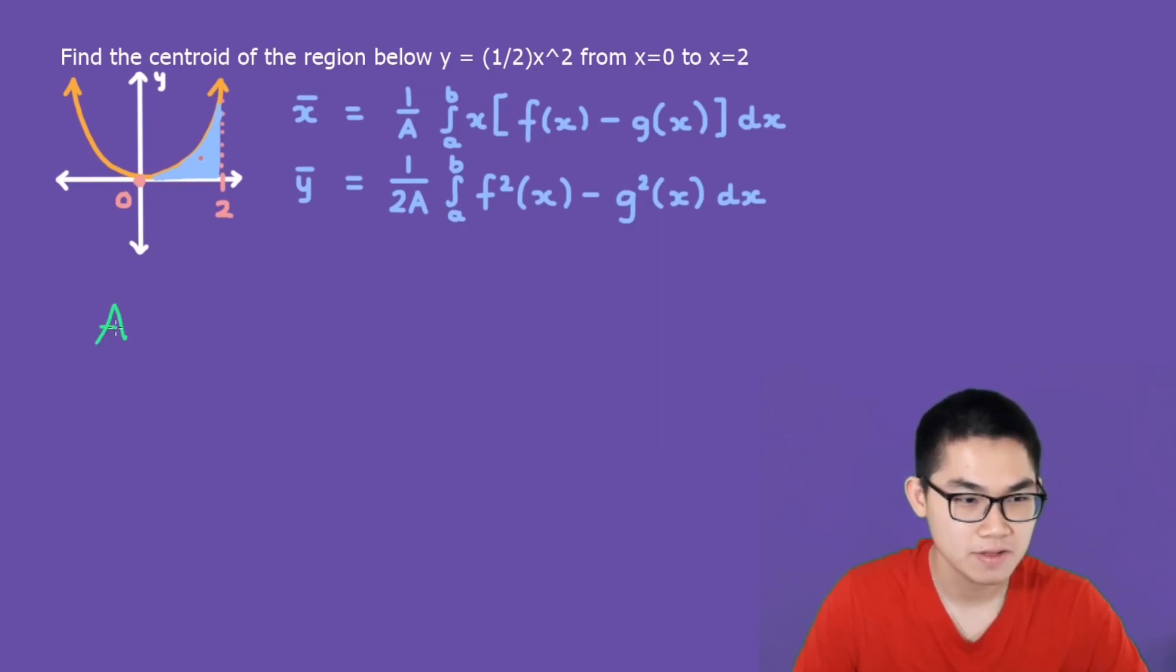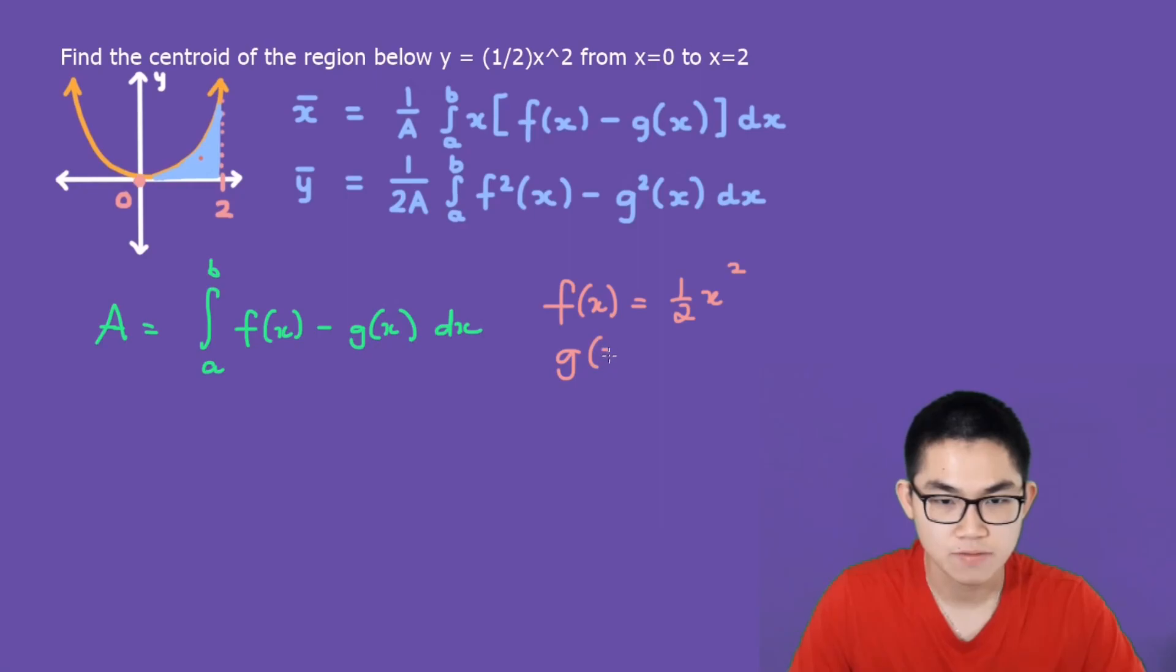So the area under the curve is just the integral from a to b of f(x) minus g(x) dx. So what is f(x)? f(x) is the upper function. So that's going to be the upper function, which is 1/2 times x squared. How about g(x)? g(x) is the lower function. And that just is the x-axis. So g(x) is simply equal to 0 because that's just the x-axis. This is going to be the integral from 0 to 2 of 1/2 x squared minus 0, but we don't need to write that. If you solve it, this will give you 4/3.